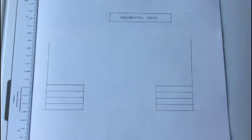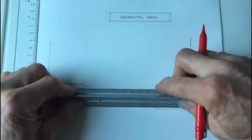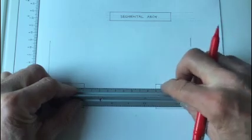So here we are about to draw our segmental arch. What we have here is obviously the two piers. With a segmental arch, the rise should be one-sixth of the span. We can see that we're 900 millimeters on a scale of 1 to 10, so one-sixth of 900...